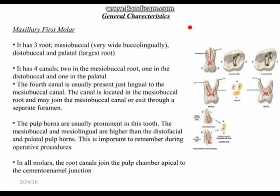Now let's talk about the maxillary first molar. Remember how the teeth in the maxillary arch start off big at the central incisor and get smaller as we go more posterior — the same is true with the maxillary molars. The maxillary first molar is typically the largest, the second molar is smaller, and the third molar is the smallest. The maxillary first molar has three roots: two buccal and one lingual. The palatal root is the largest — the longest, with the biggest dimensions.